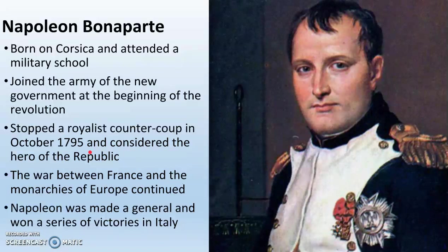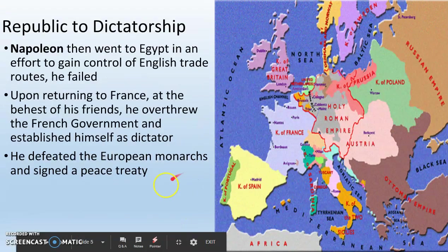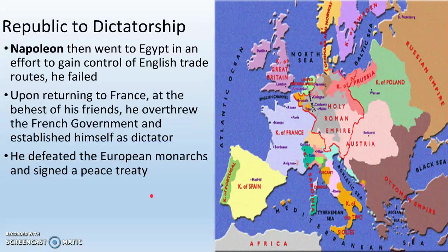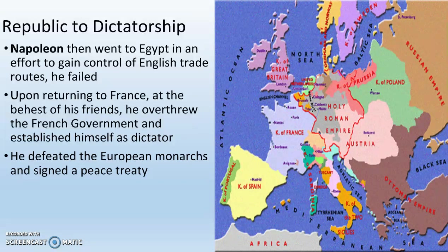Some royalists were actually trying to bring back the monarchy. The war between France and the monarchies of Europe continued. Napoleon was made a general and actually won a series of victories in Italy as general of some of the French armies. Napoleon is then sent to Egypt, which at this point is a colony of Great Britain, and he is trying to capture some of the trade routes in North Africa and the eastern Mediterranean. He does fail in this endeavor, but upon returning to France at the behest of some of the rich bourgeoisie who had taken over the French Republic, Napoleon establishes himself as a dictator of France.